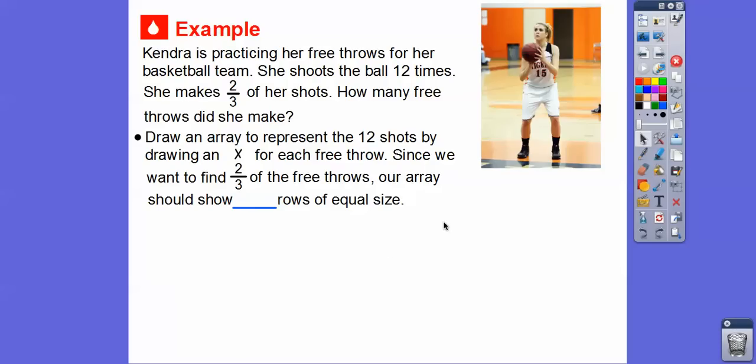And since we want to find two-thirds of the free throws, our array should show how many rows? It should show this denominator right here. It should show three rows right there. So look at the denominator, and that's how many rows we're going to do. Now remember, rows go sideways. Columns go up and down. And I remember this like a coliseum has these columns that go up and down that hold them. Column, coliseum. So columns go up and down. Rows go side to side.